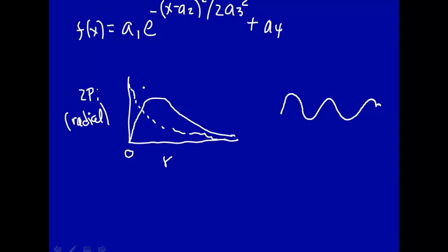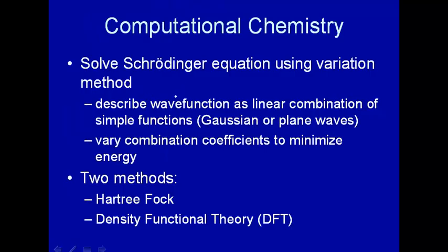And the Gaussian, typically the number of Gaussians for a medium-sized molecule might be in the order of a few thousand Gaussian functions you're combining. But the general overview, then, is you describe wave functions as a linear combination of these simple functions, and you vary the combination coefficients, how you're combining those wave functions in order to minimize the energy.